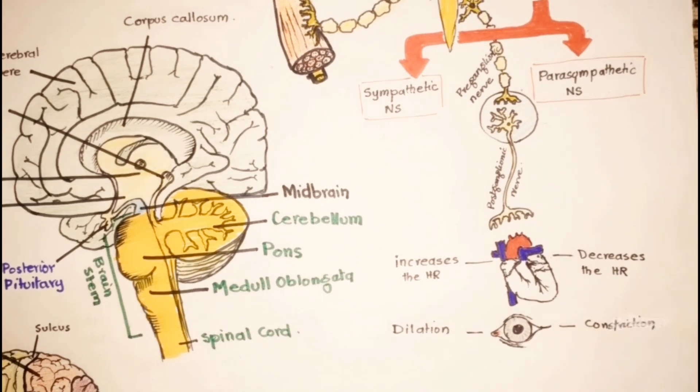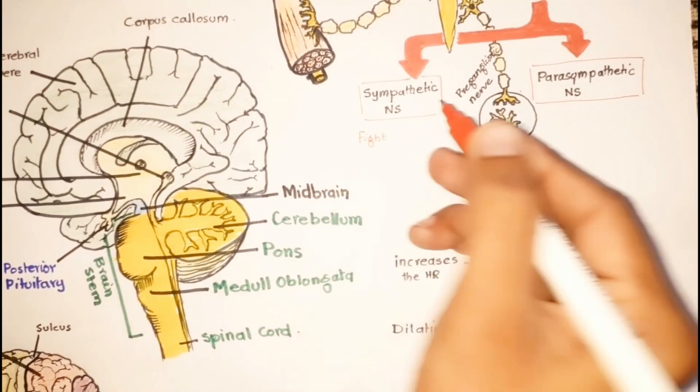Moreover, the sympathetic nervous system is more active during extreme situations or unexpected or dangerous conditions, like when we are facing a threat or running from a dog, or simply doing exercise. Thus it is called the fight or flight response.